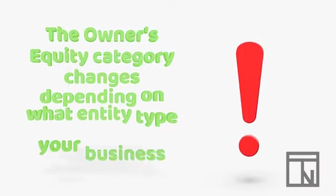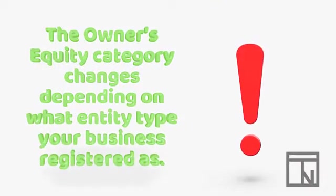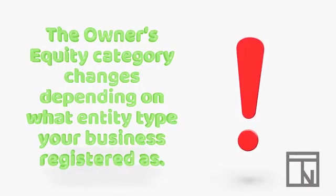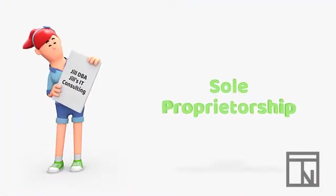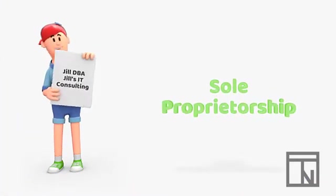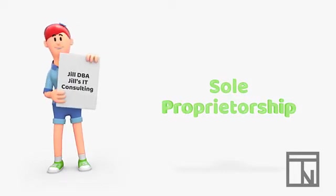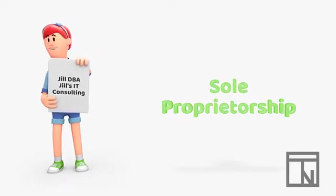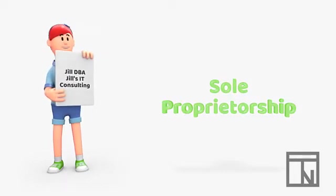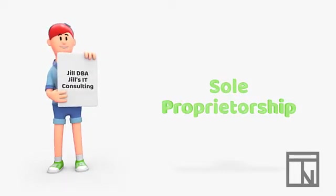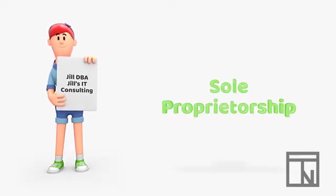Note that the owner's equity section can look very different depending on the entity type used to register the business. For right now, we'll be looking only at the owner's equity category for a sole proprietor business. Later, we'll look at the differences for a corporation.